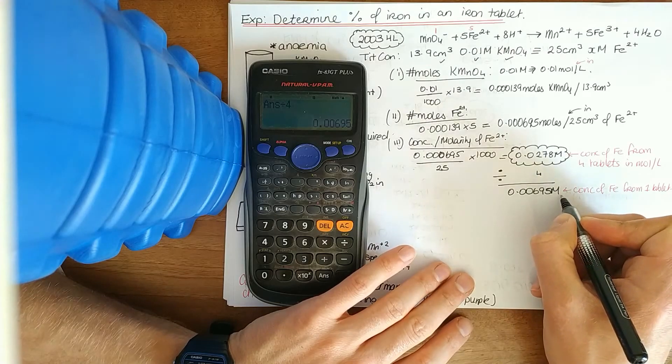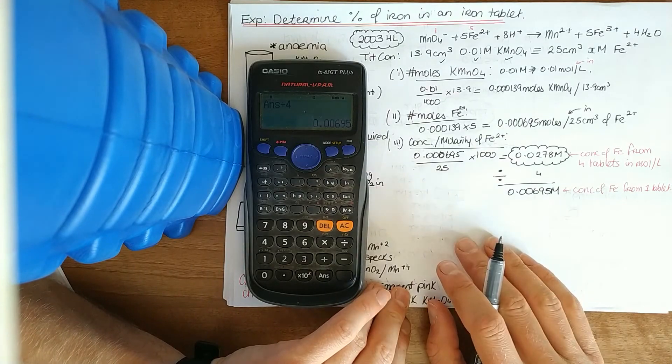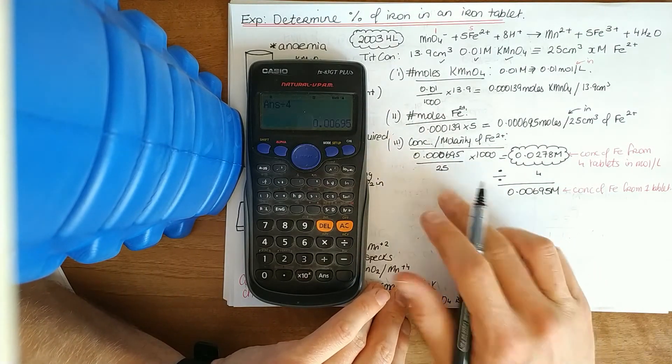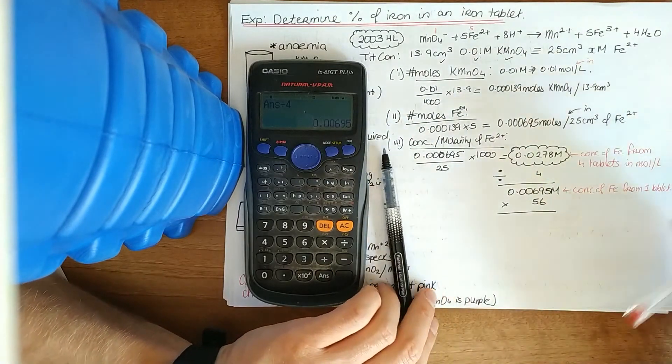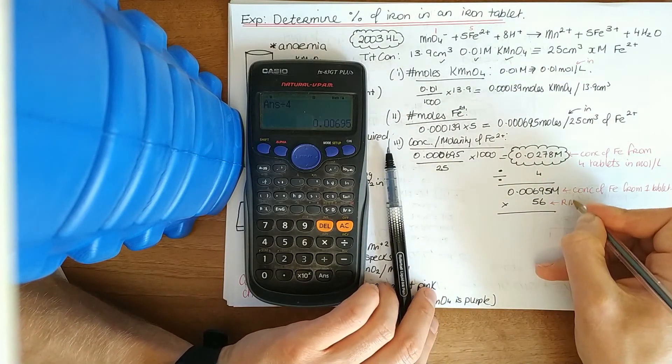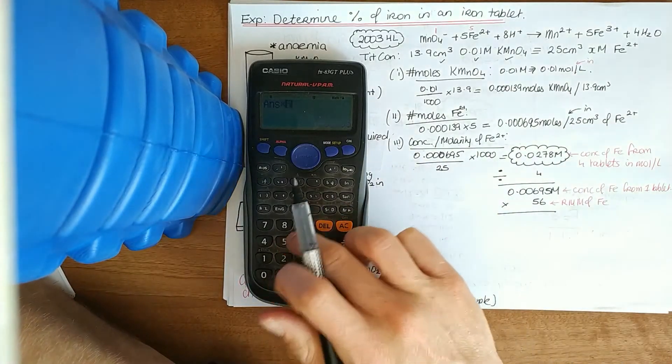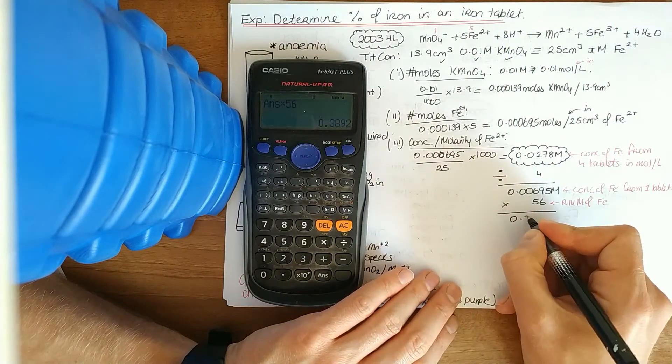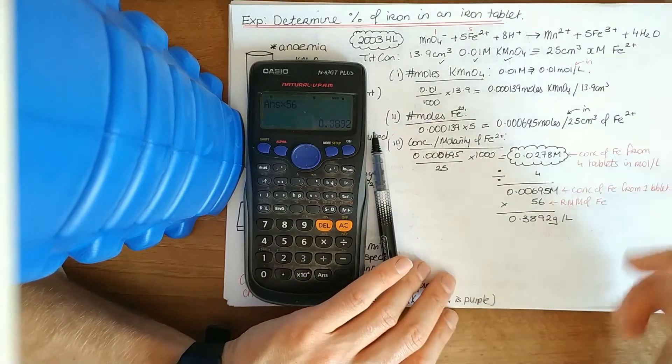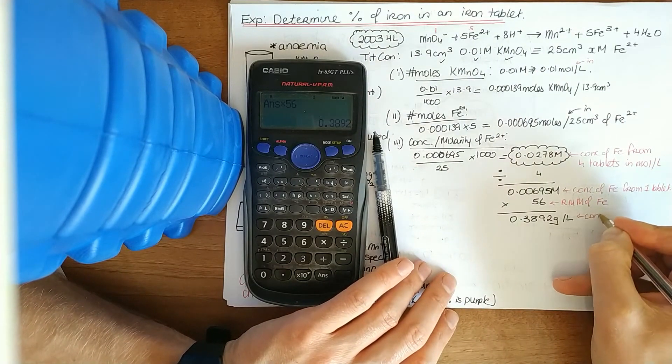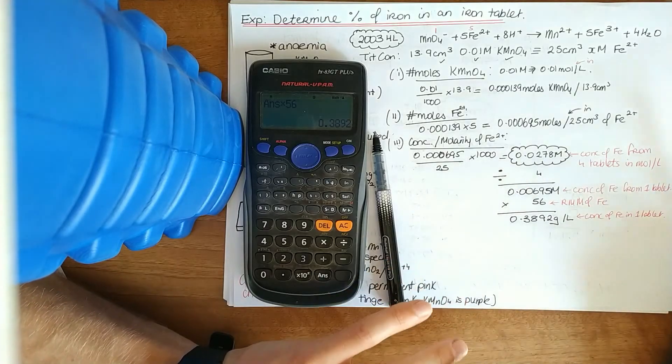They do ask for mass now. I'm in the number of moles per litre. How do I go from moles to grams? I'm using that part of the triangle where I'm multiplying. When you're leaving moles, you're multiplying. The relative molecular mass of iron is 56. We get 0.3892 grams per litre. That's the concentration of iron in one tablet. But in this case, it's in grams per litre.